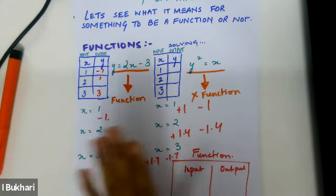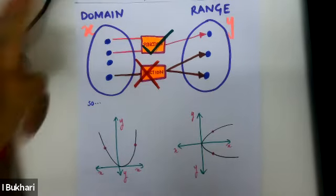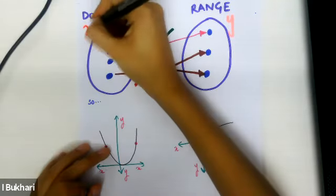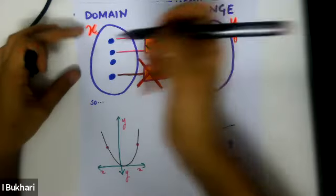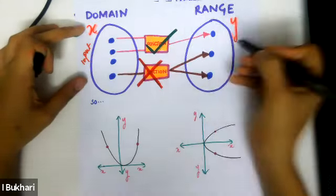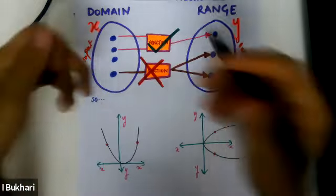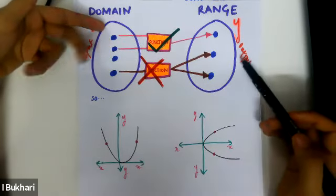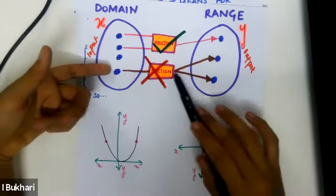What I just proved is the same thing the diagram says: two elements from the domain — the x values — can give the same output, and that's totally fine. But one input cannot give us two outputs.